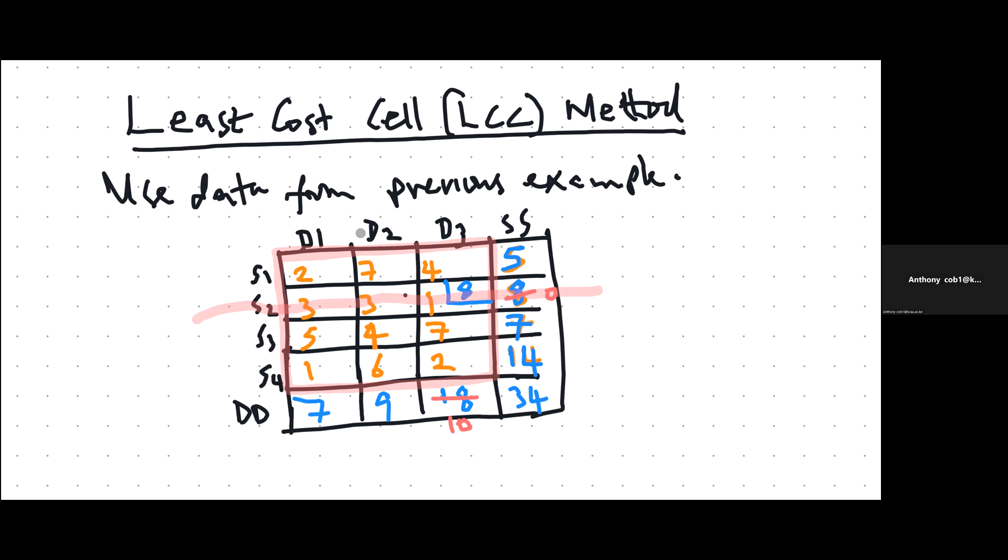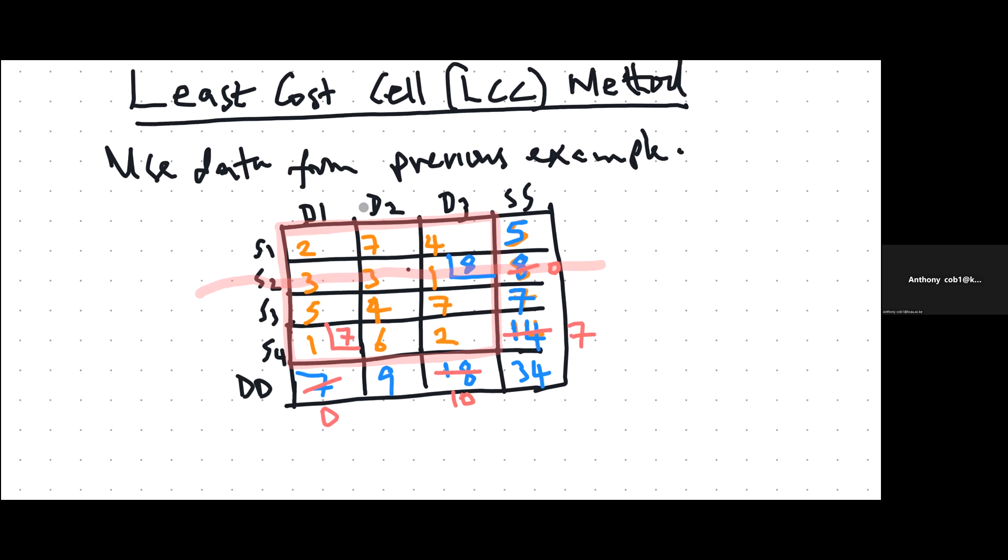In the remaining matrix, you check the least cost. We either allocate 7 or 14. We will always allocate the smaller of the two. So there are 7. You take away 7 here, you take away 7 there to get 7. Then if there's a row or column whose demand or requirement has been satisfied, you delete it.